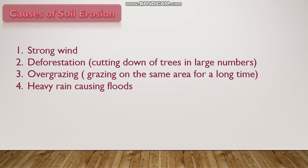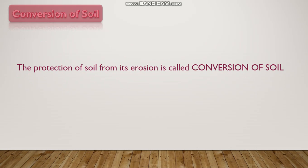The causes of soil erosion include: strong wind, deforestation — which means cutting down of trees in large numbers — overgrazing, which means grazing on the same area for a long time, and heavy rain causing floods. These are the main causes of soil erosion.